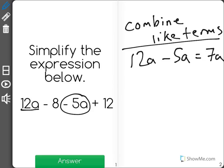We get 7a. Now we need to do the same with our numbers. We have negative 8 plus 12.